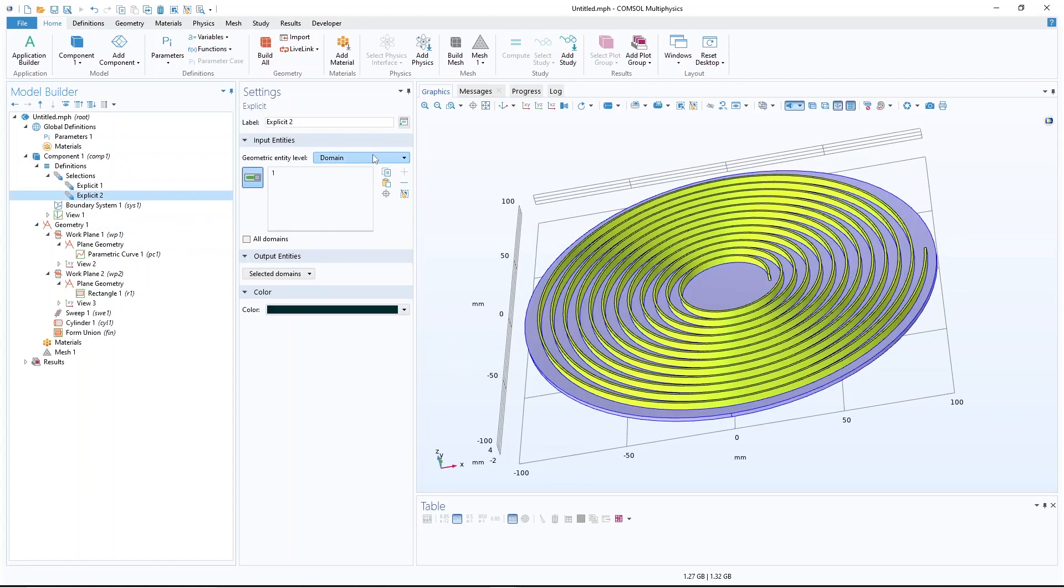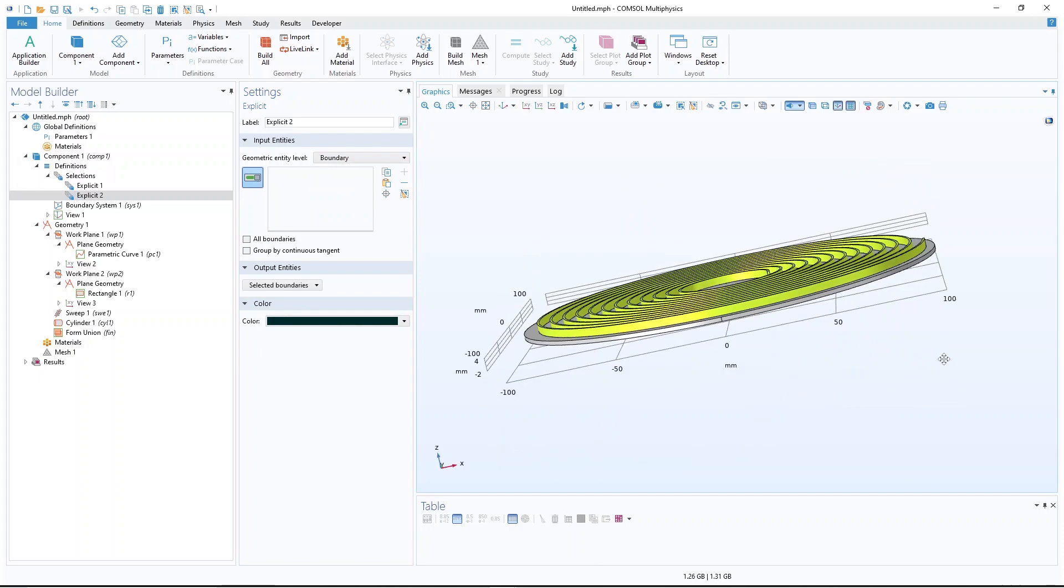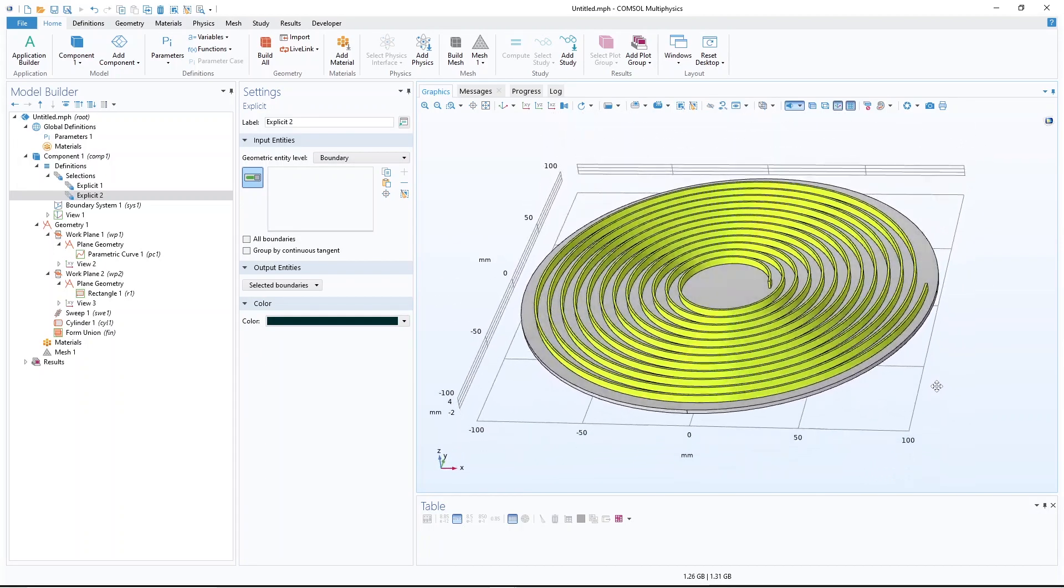You could also select boundaries here. So if you would select boundaries or edges, you could also assign a different color. So if I would select boundary, I think for edges we don't have color. Only for boundary and domain, you can assign different color.